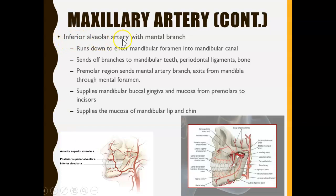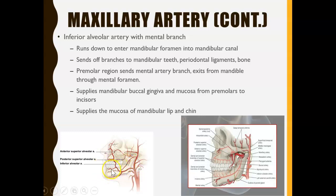The first branch we'll look at is the inferior alveolar artery. 'Inferior' means below, so this artery is below the teeth. It branches off from the maxillary artery and supplies all the mandibular teeth and the surrounding bone. It also provides sensation to the mandibular lip and the chin.